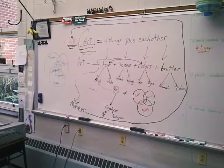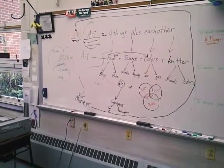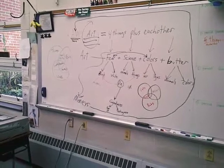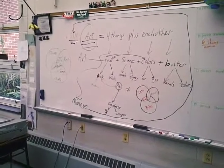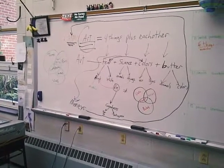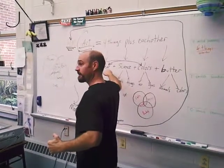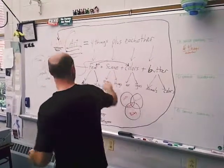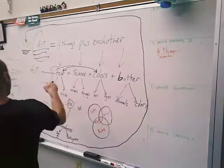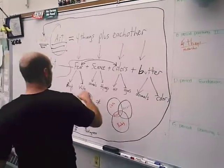How many things make art? That was the lesson. Reading? Oh yeah, well, top down, read from the top down. Go ahead and explain. Art equals four things plus each other. Uh-huh, okay. And four things is fear, science, colors, and butter. Fear is made of black and white. All right.